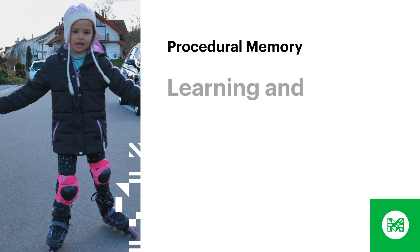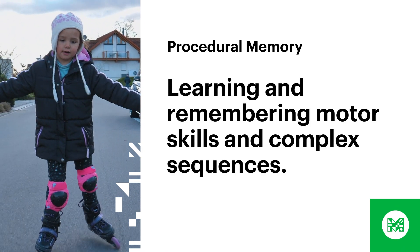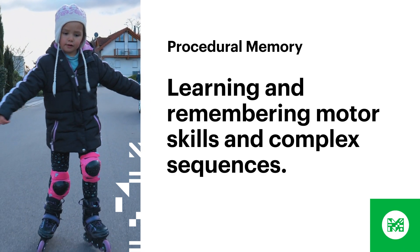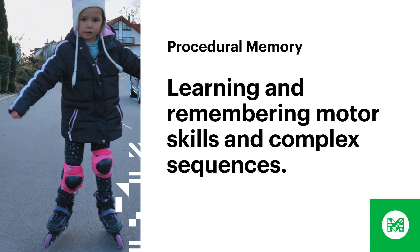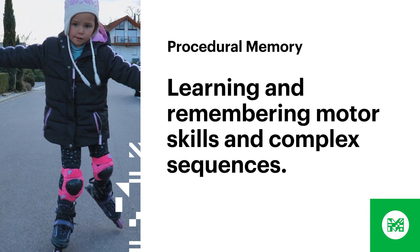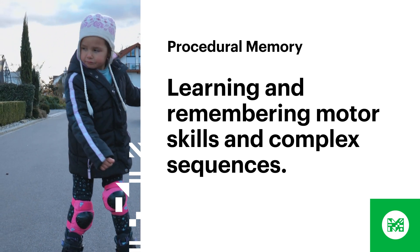Procedural memory, on the other hand, comes into play when learning and remembering motor skills and complex sequences. Think riding a bike or playing the piano — you might think of this as muscle memory. Procedural memory is implicit, which means that we can't explain why we know the things we know. Now, as I mentioned earlier, declarative and procedural memory can actually learn the same things, but in different ways.